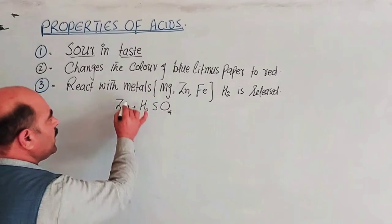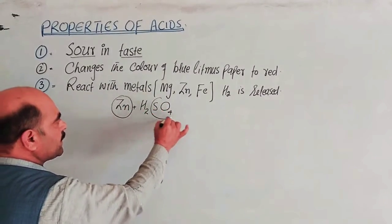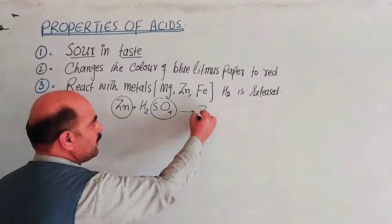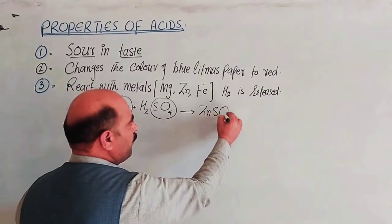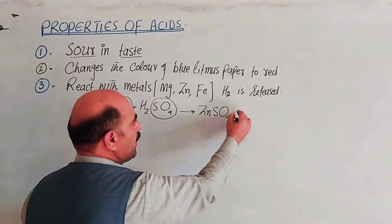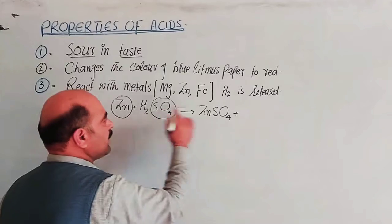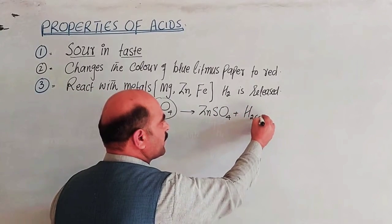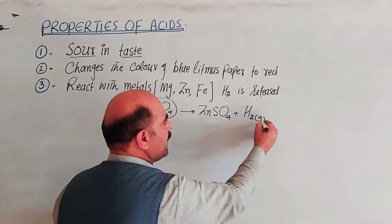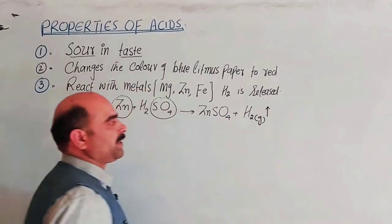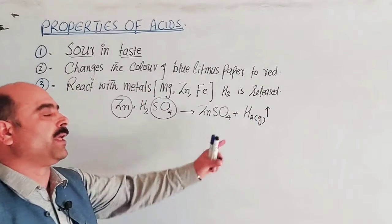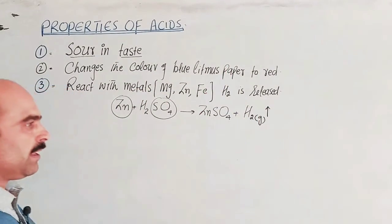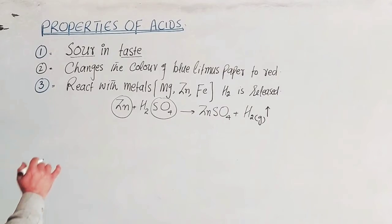The reaction is: Zn + H₂SO₄ → ZnSO₄ + H₂(g). The upward arrow indicates that hydrogen gas is released and rises upward. This is another main property of acids.